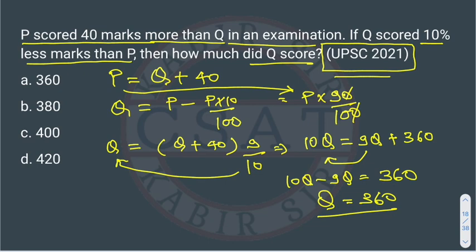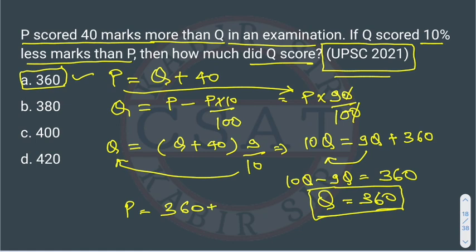The answer is Q = 360, so the answer is option A. If we want P's score, P = 360 + 40 = 400. It's a very easy question. If you have any problems, comment on this video and I will explain again.